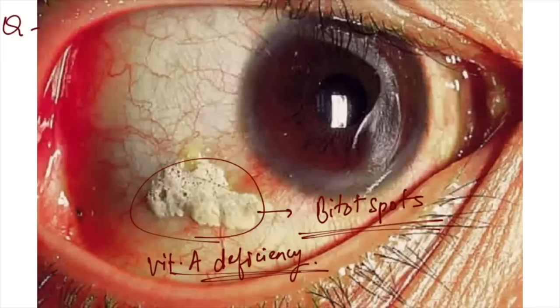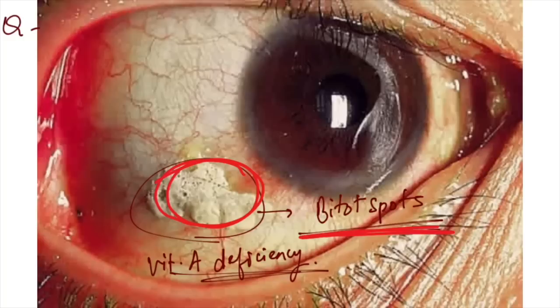You can see this image was given, Bitot spots were there in the image. Which vitamin deficiency was asked? Vitamin A deficiency. Bitot spots are seen in xerophthalmia.